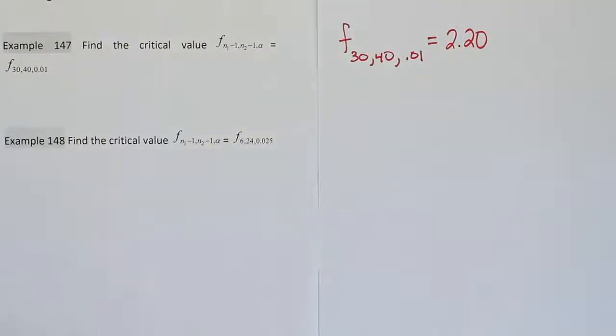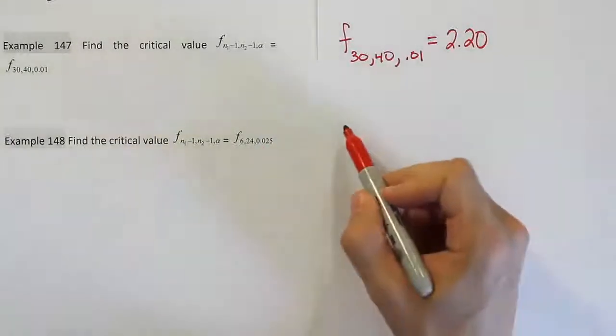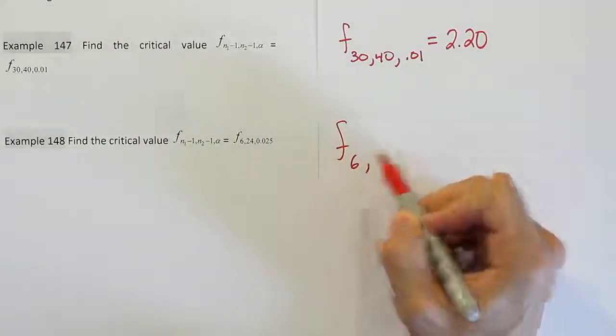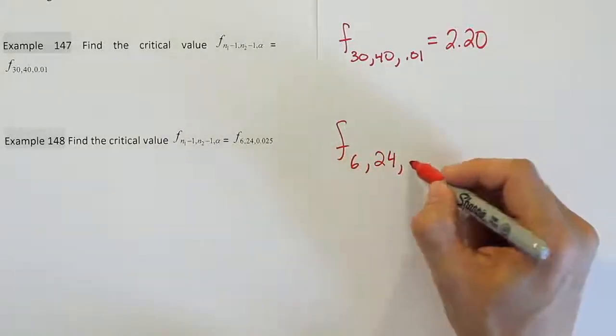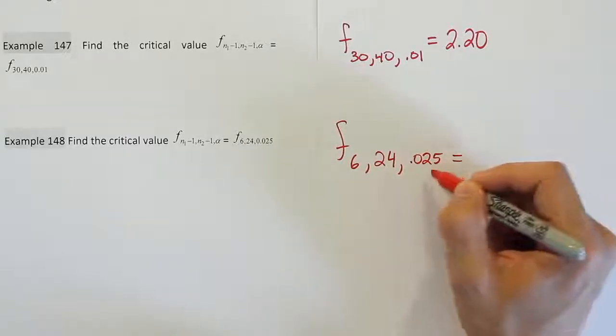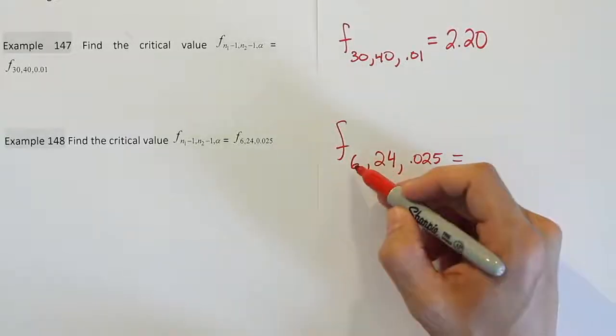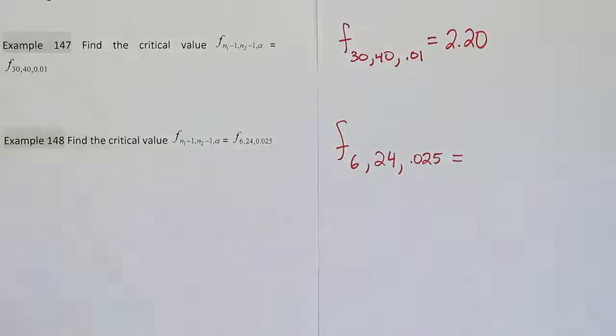Alright, let's do this one more time for the second example. The second example says the numerator degrees of freedom is 6 and the denominator degrees of freedom is 24, and the alpha is 0.025. So we need to go to the 0.025 table, and then we look up numerator degrees of freedom, denominator degrees of freedom, and we'll find our value. So let's go do that now.